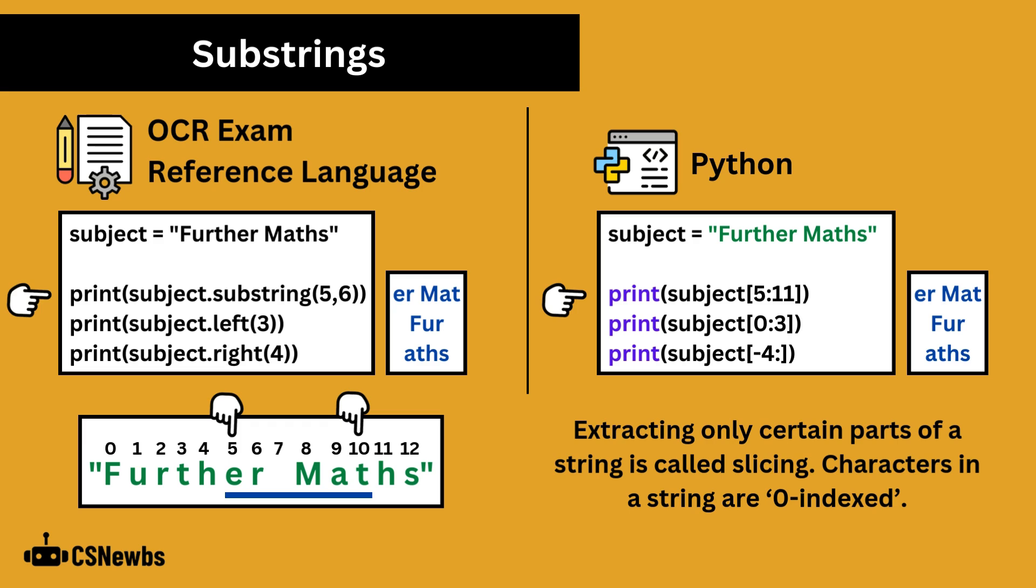In Python, square brackets can be used in a similar way. The extract will start on the character with the index 5, just like OCR ERL, but the second number refers to which character to extract up to. Except, Python uses an exclusive range, so 11 will actually stop on the tenth character, which is T.